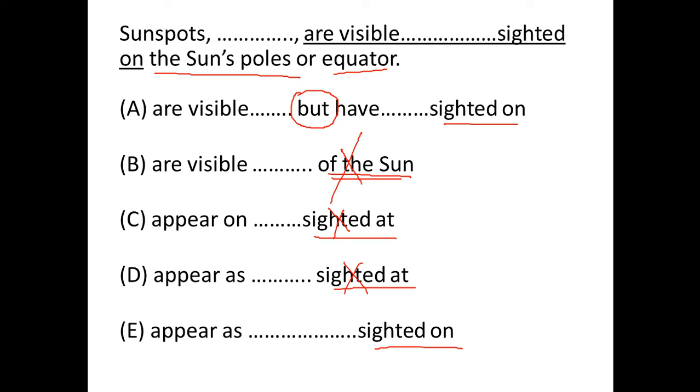So based on that, we can eliminate option E. Apart from that, we have a difference of are visible and appear as. Remember, we use appear as when we play a role, like we played as villain in a movie. So that's a role played by somebody. Here we don't have any role play, so appear as is wrong.